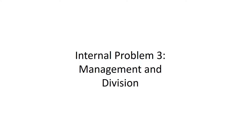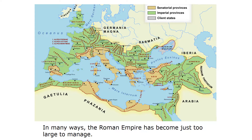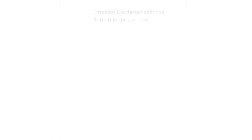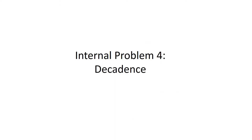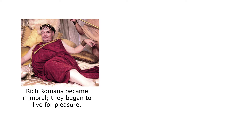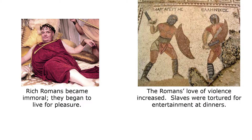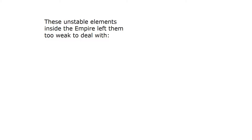Problem number three was management and division. In some ways, the Roman Empire had just become too large to manage. Emperor Diocletian, therefore, split the Roman Empire in two. Problem four was decadence. The rich Romans became immoral and began to live for pleasure. The Romans' love of violence increased, and slaves were tortured for entertainment at dinners. These unstable elements inside the empire left it too weak to deal with external problems.